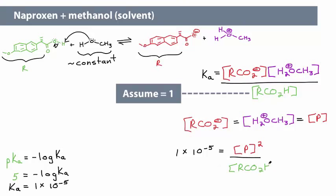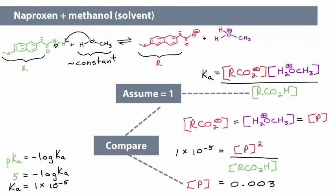Solve for the concentration of products, p, which gives a value of 0.003. This value is many orders of magnitude smaller than naproxen's concentration. This tells us that naproxen is major at equilibrium, and this acid-base equilibrium that we've drawn is not a meaningful process in the reaction.